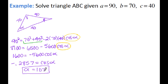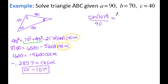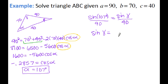Now that we've solved for the largest angle, we want to jump to the smallest angle using law of sines. I have my angle on its corresponding side. The smallest angle is opposite the smallest side, which was 40 — so we want to find gamma next. So: sine of 107 degrees over 90 equals sine of gamma over 40. Cross multiply: 40 times sine of 107 divided by 90 gives me 0.4250. The inverse sine gives me 25 degrees.